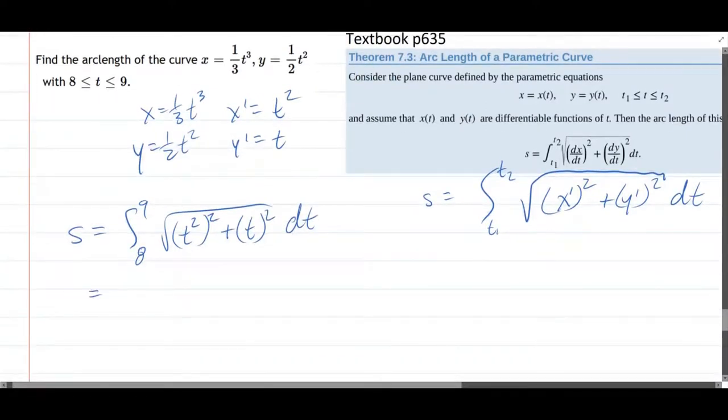And we can square the squared, and that's t to the fourth, or maybe better off if we write it as factoring out the t squared.